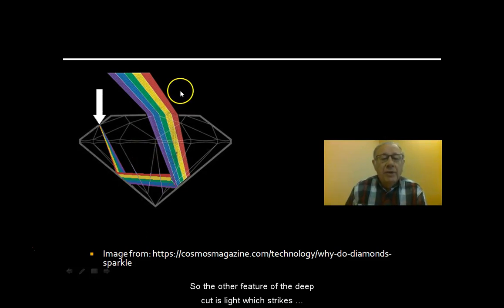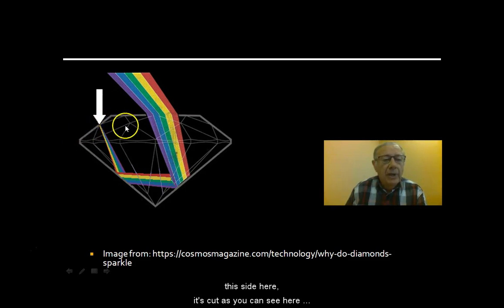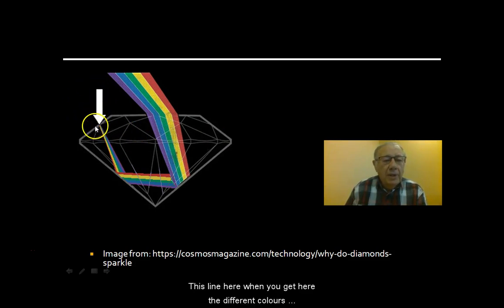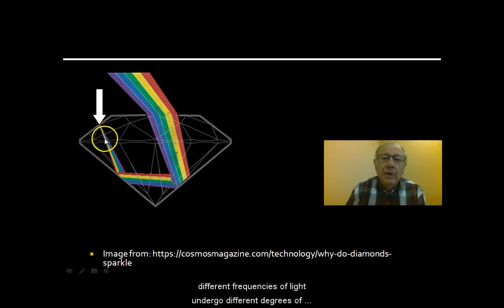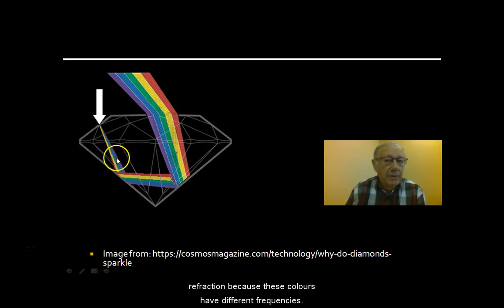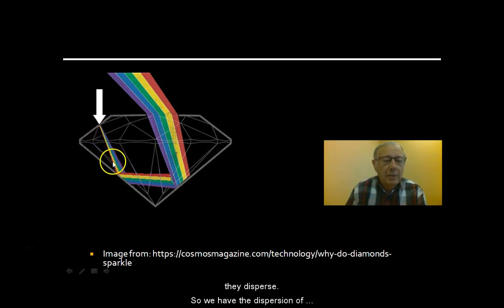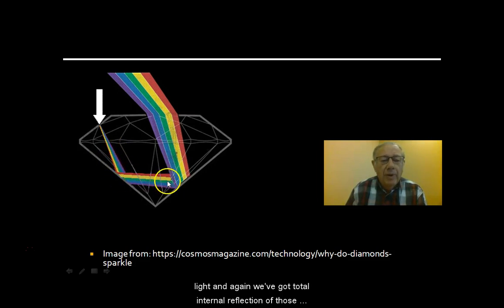The other feature of the deep cut is light which strikes the side here. This light, when it gets here, the different colors — the different frequencies of light — undergo different degrees of refraction because these colors have different frequencies. So when they get here they disperse, and we have the dispersion of light. Again we've got total internal reflection of those different colors.